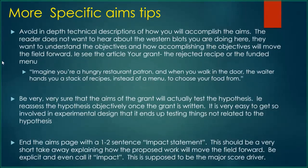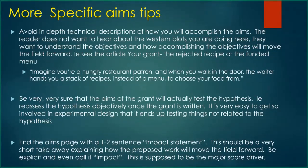Some things to avoid on a specific aims page: this is not a place for in-depth technical descriptions of how you will accomplish things. You don't talk about your western blots or the details of your experimental design. What you want to do is make sure the objectives and how accomplishing that objective will move the field forward are clear. The methods go in the main body of the grant. One of the articles I sent you is called 'Your Grant: The Rejected Recipe or the Funded Menu,' which focuses on the idea of big picture versus how you're going to accomplish it.